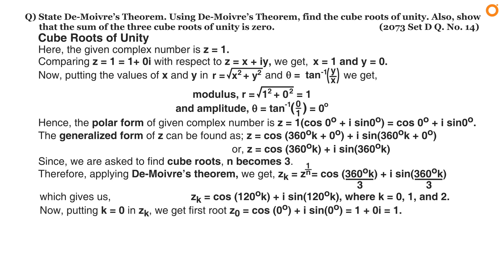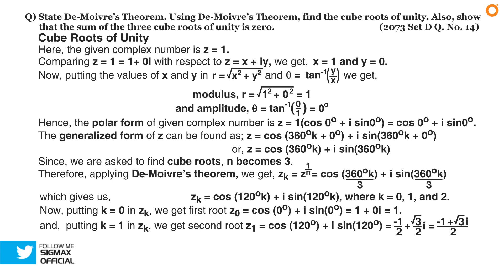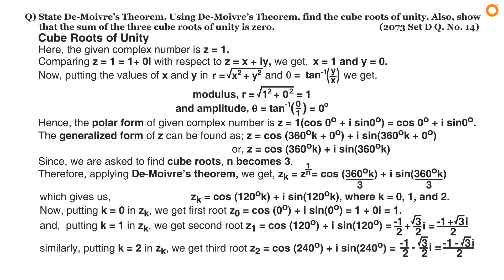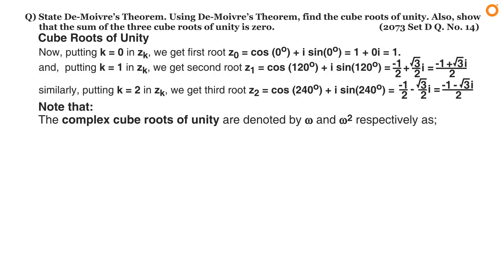In step four, substituting k equals 0, 1, and 2: putting k equals 0, the first root z₀ equals 1. Putting k equals 1, the second root z₁ equals (−1 plus √3 i) divided by 2. Putting k equals 2, the third root z₂ equals (−1 minus √3 i) divided by 2. The complex cube roots of unity are denoted by omega (ω) and omega squared (ω²), where ω equals (−1 plus √3 i)/2 and ω² equals (−1 minus √3 i)/2.